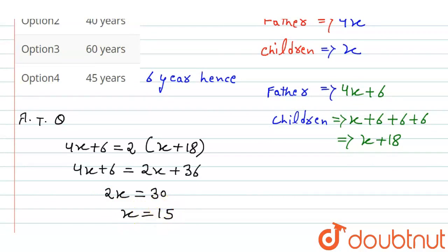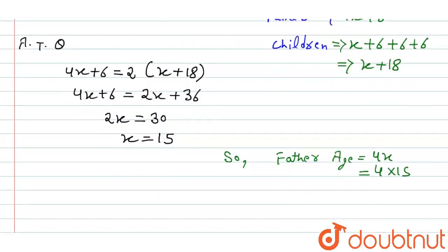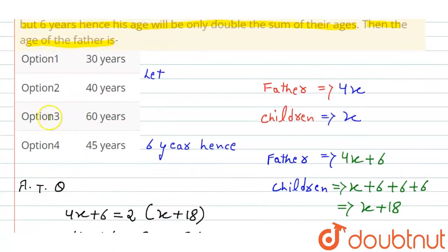Now we need the father's present age. The father's age is 4x. We found x equals 15, so 4 times 15 equals 60 years. This is our required answer. Checking the options, we can see that option 3 gives the age as 60 years. Thank you.